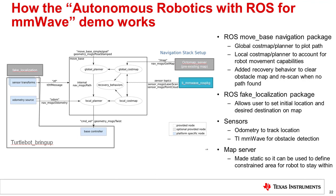The local cost map and planner are similar, except they account for the actual robot's physical attributes such as size, weight, motors, acceleration, and velocities, and use that information to determine how to move the robot to try to track the course planned by the global planner. Finally, if the robot gets stuck or cannot make it to its goal, it activates recovery behaviors. There was a recovery behavior added to this lab to clear the obstacle map and rescan when no path could be found.